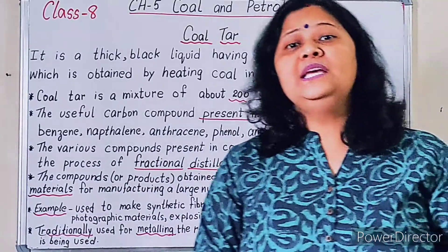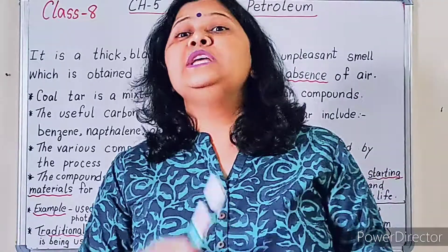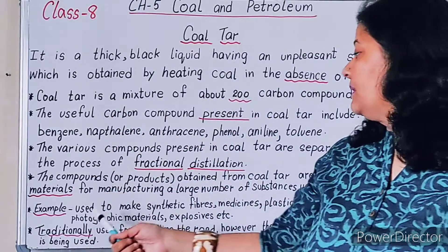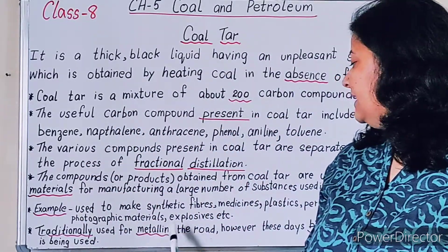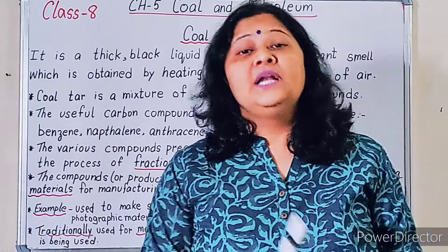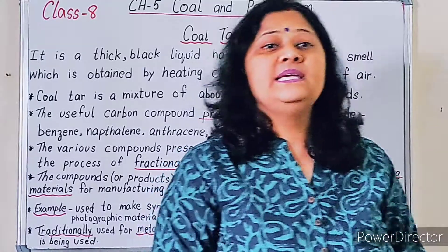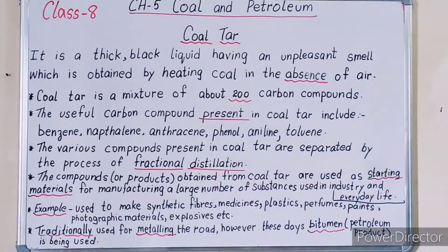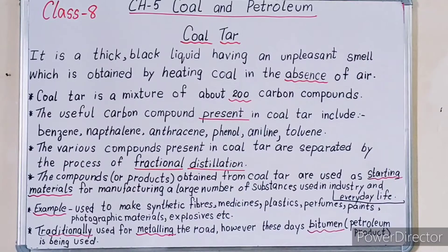Traditionally, coal tar was used for metaling the roads. But nowadays, in its place we use bitumen, which is a petroleum product.